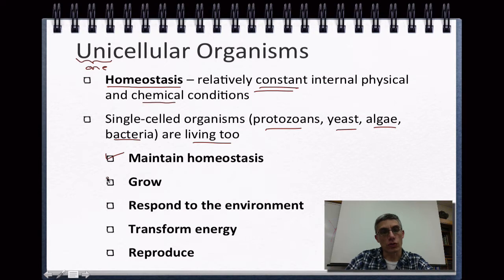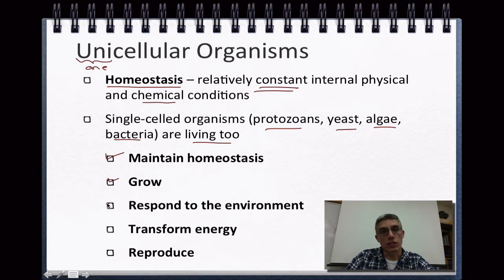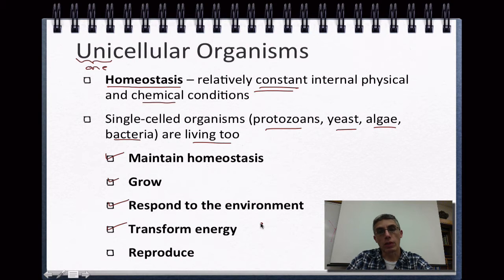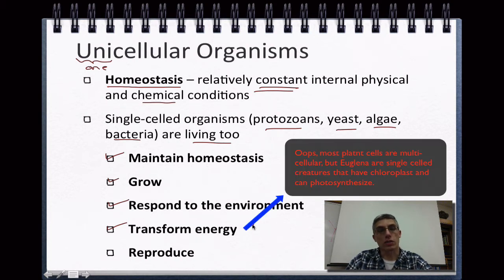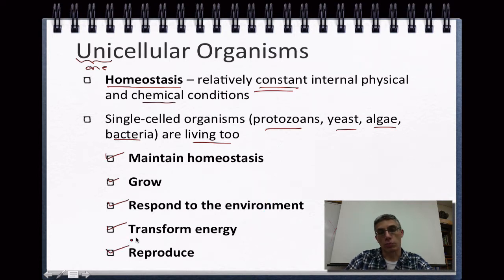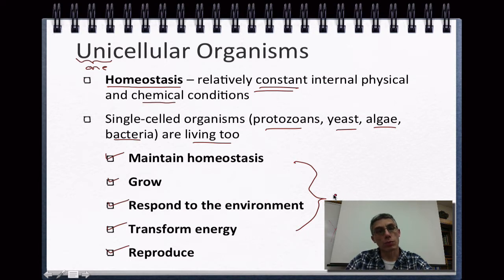We know that single-celled creatures also definitely grow. If you think about a cell that's divided, those two resulting cells will be a little bit smaller than the adult. These cells definitely respond to the environment, which means that if you expose them to certain types of stimuli, those cells are going to respond in some way. They definitely transform energy — a plant cell, for example, will collect solar energy from the sun and transform it into chemical energy the plant can use as food. Cells also reproduce, making more of their own kind. These are the characteristics we use to determine whether something is alive, but for this screencast we're going to focus primarily on homeostasis.